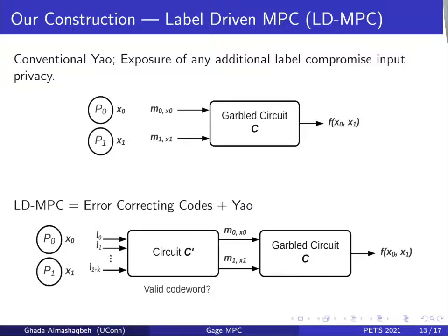We handle that by making Yao robust against revealing K additional labels. This is done by adding another layer of indirection to the computation: circuit C-prime, as seen in the figure. Circuit C-prime will output the actual labels needed for the garbled circuit C if and only if its inputs constitute a valid codeword. By using a linear error-correcting code with a minimum distance of K plus one, evaluating the circuit C over a new input value will require K plus one additional labels, thus achieving K-robustness.